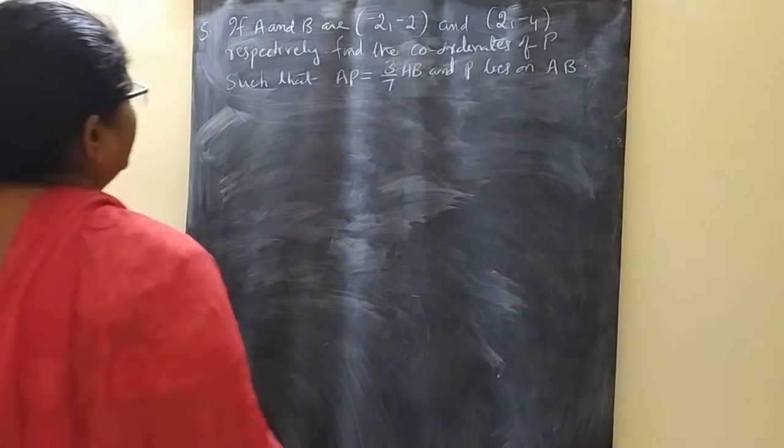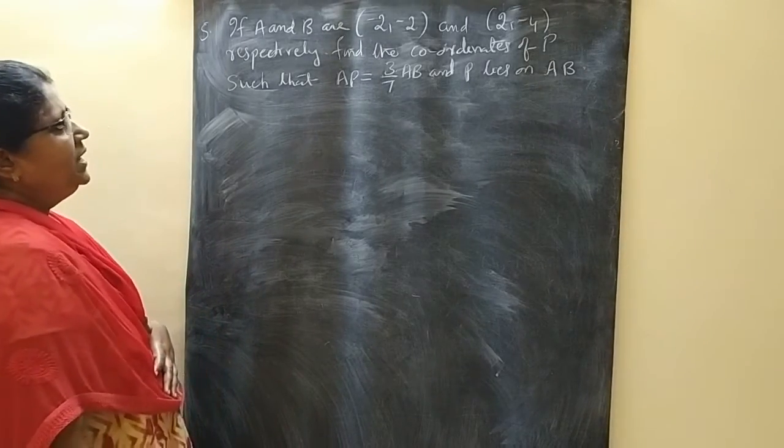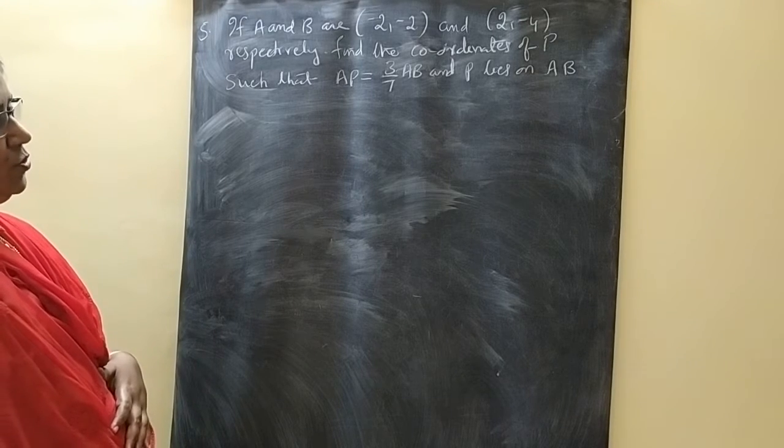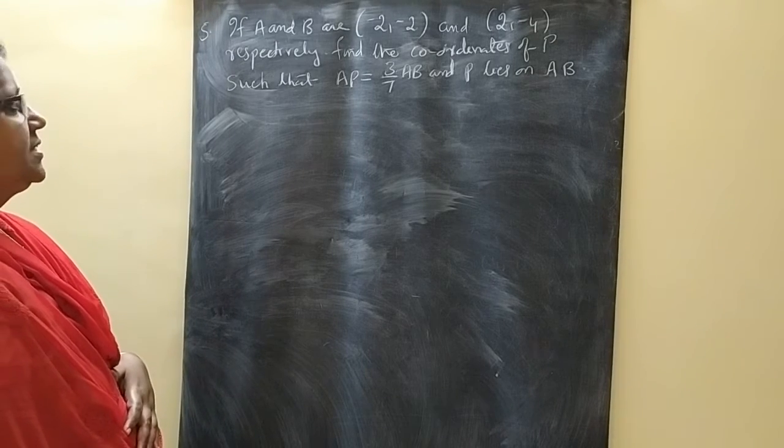Next question: if A and B are (-2, -2) and (2, -4) respectively, A and B points are given.